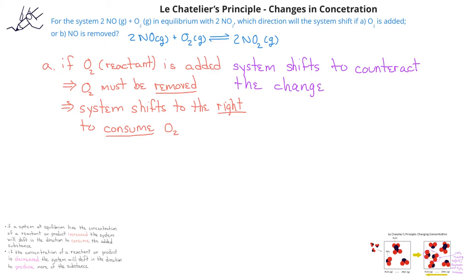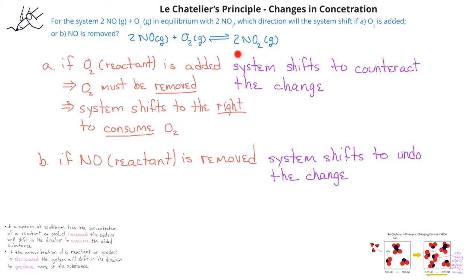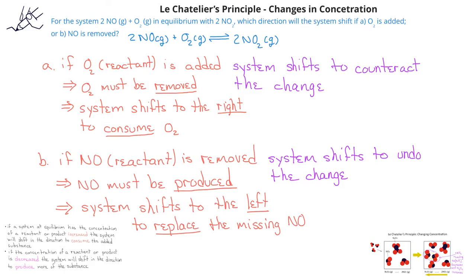What about the second example, where NO is removed from the system at equilibrium? If NO, a reactant, is removed, the system will shift to the left to produce more NO and to decrease the original concentration of NO2.